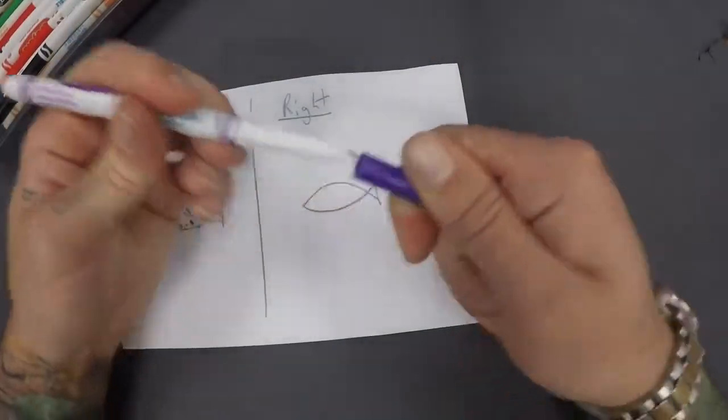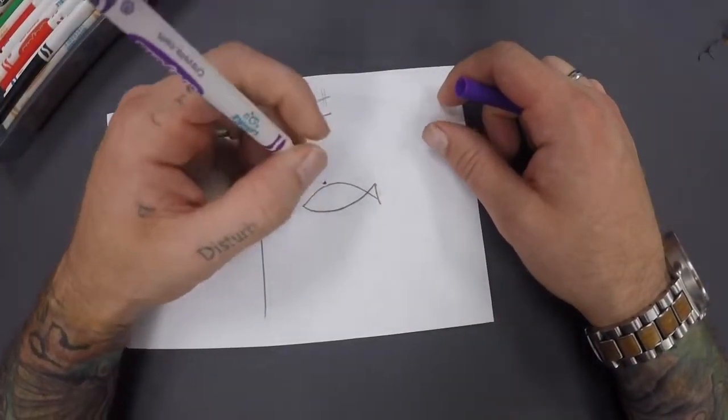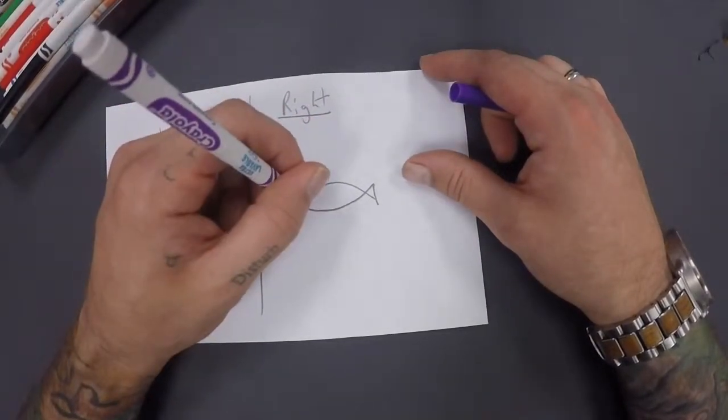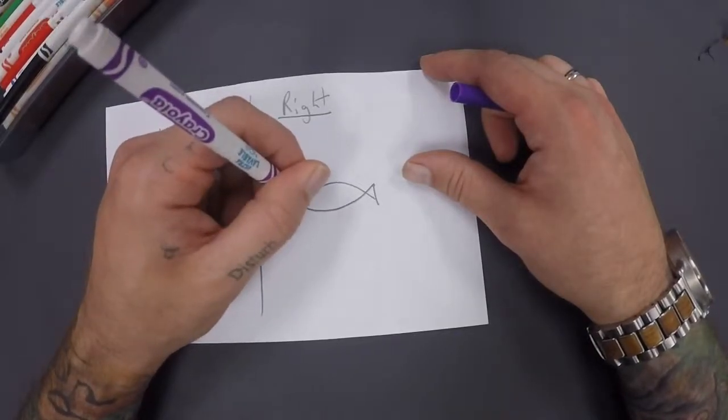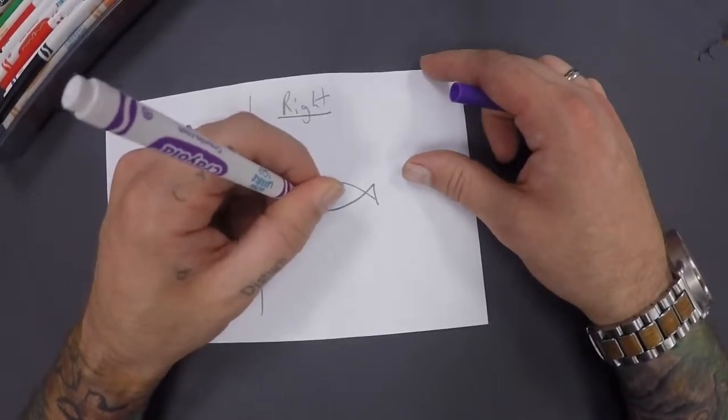We've got our marker. So for the right way, we want to keep the marker as straight up and down as we can. And then we're not even really tapping. We're not pressing down. We're just touching. We're not tapping. We're touching. And where we touch, it'll make a nice little dot.